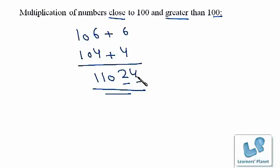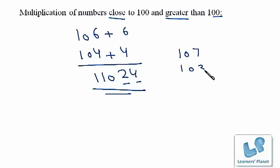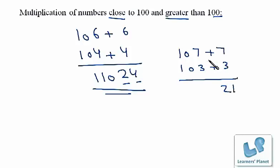Let's take another example: we'll multiply 107 and 103. This is plus 7 and this is plus 3. Seven into 3 is 21, and 107 plus 3 is 110. So the product of 107 and 103 is 11021.